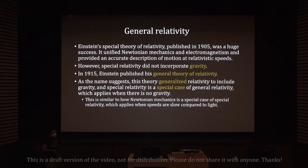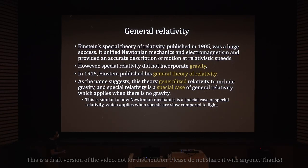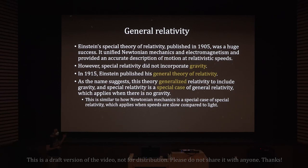In our daily lives we can use Newtonian mechanics — a very simple theory — because we are not moving close to the speed of light. But when things move close to the speed of light, or at a significant fraction of it, including light itself, Newtonian mechanics isn't applicable. We have to use special relativity — a more complicated but more precise theory.